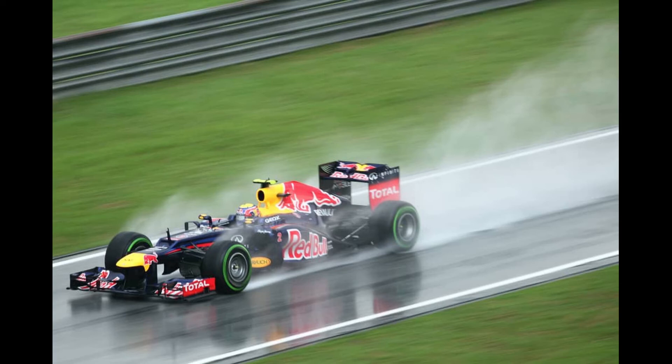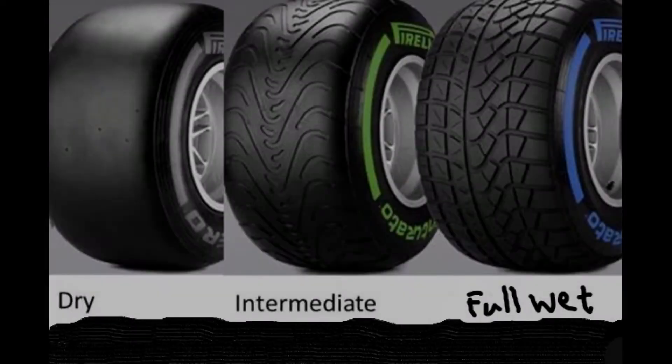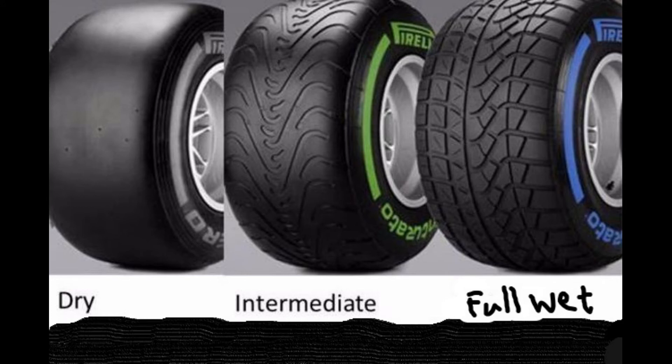There are two types of tires with tread that F1 teams utilize: the intermediate tire, set for light rain or dampness, and the full wet tire, set for heavy rain. If the weather starts to turn bad, teams are able to quickly make a pit stop and change to the correct tire for the track conditions.